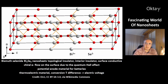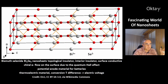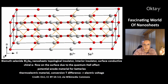Another example of nanosheets is bismuth selenide, Bi2Se3. Its nanosheets are topological insulators, which means the interior is an insulator but the surface is conductive — there is a chiral electron flow on the surface due to the quantum Hall effect. Bi2Se3 is also a potential anode material for batteries and a thermoelectric material, meaning it can convert temperature differences into electric voltage.